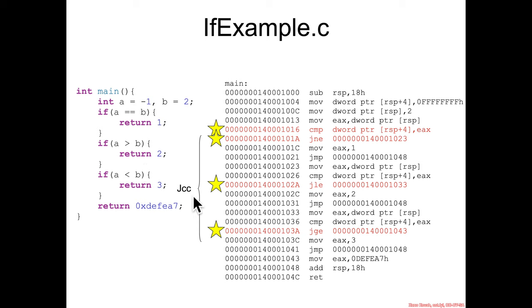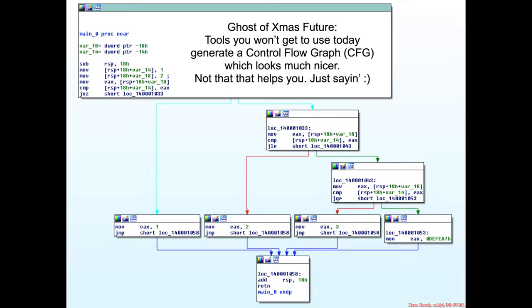I'm going to call these JCC instructions — a family of instructions meaning jump based on some conditional code. Not equal, less than or equal, greater than or equal.